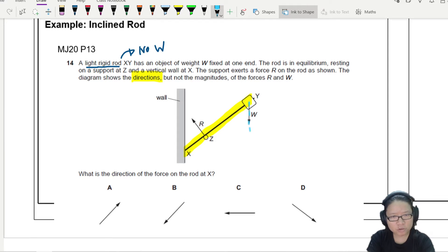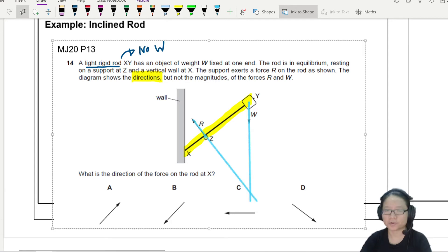Now extrapolate the line for R. Where will they intersect? They will intersect somewhere down here. I'm going to pause and draw a better line. This is my best attempt - the line of action of W is like this, the line of action of R is like this, and they intersect here.